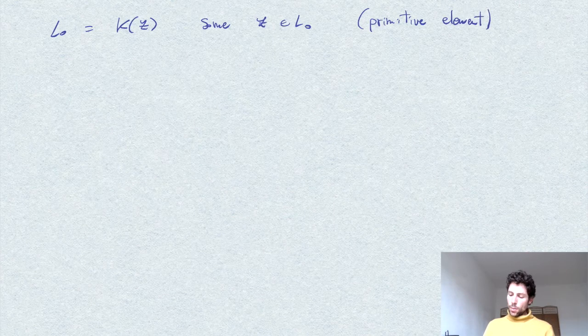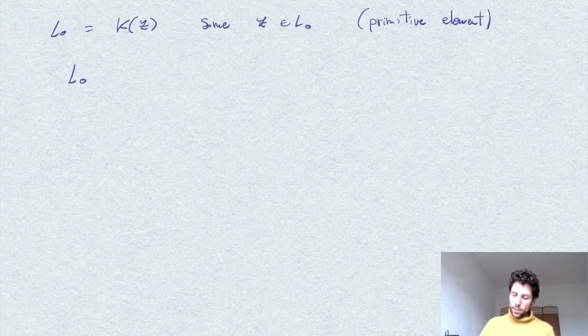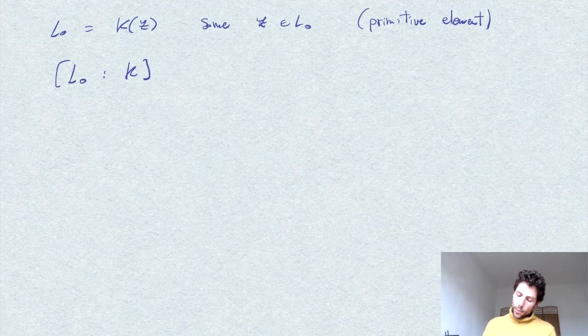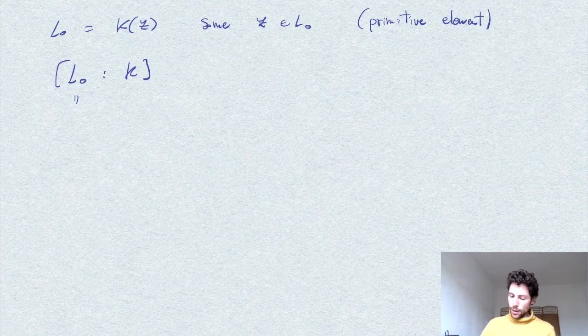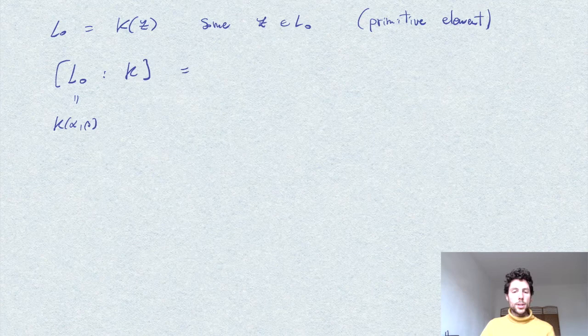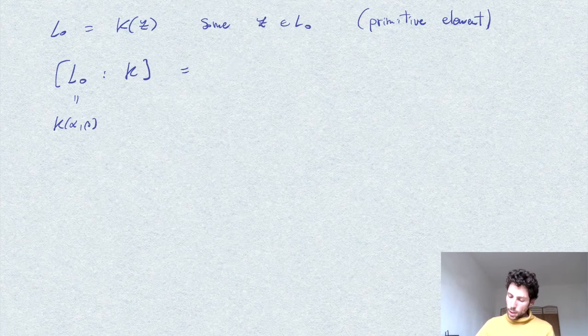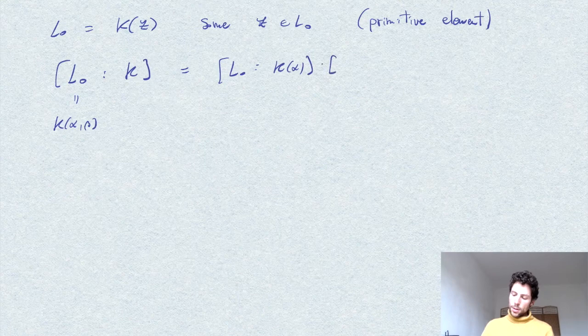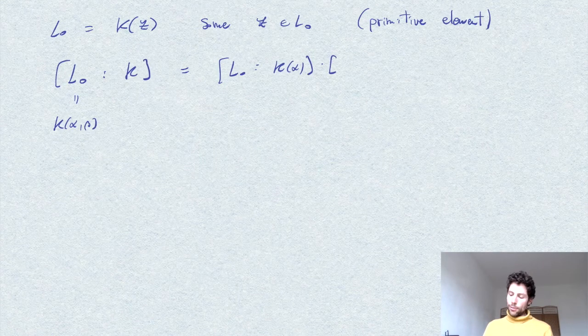Now, what happens if we apply the degree theorem? So we take a look at the degree of L0 over k. And we apply the tower law. Say, we think of L0 as we defined it just before, which is k of alpha and beta. So this is equal to the degree of L0 over k of alpha times the degree of k alpha over k.